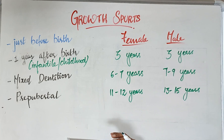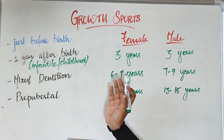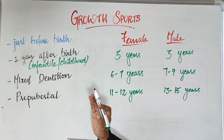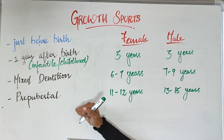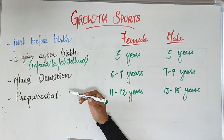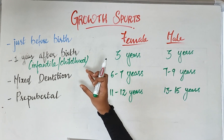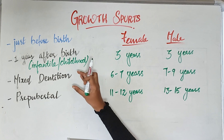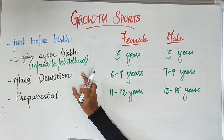Human beings generally have 4 growth spurts in their whole lifetime. The first one is seen just before birth, that is during intrauterine life. The other 3 growth spurts are seen after birth. The first post-natal one is seen 1 year after birth, also called the infantile or childhood growth spurt. The second one is the mixed dentition growth spurt, the time where both primary and permanent dentitions are present in the mouth.